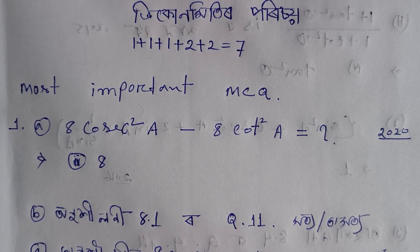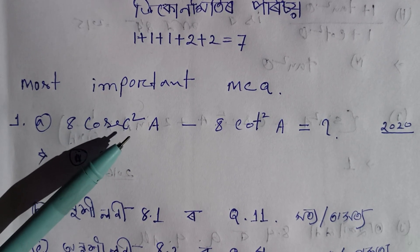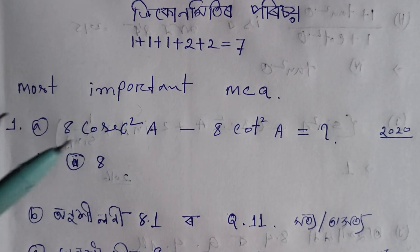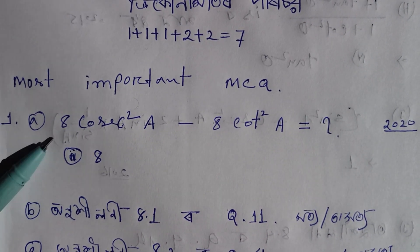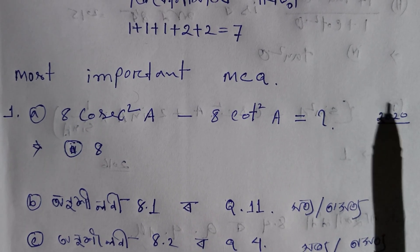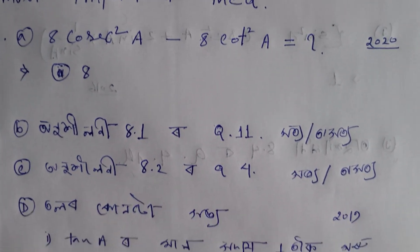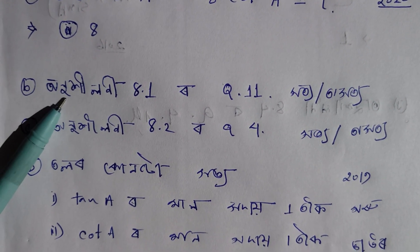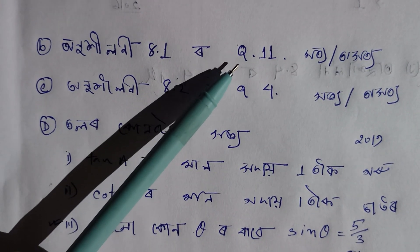We have to write the number of a. Some 8 causes square a minus 8 square a is equal to 8. So we have to write the number of a. This is the number of a.